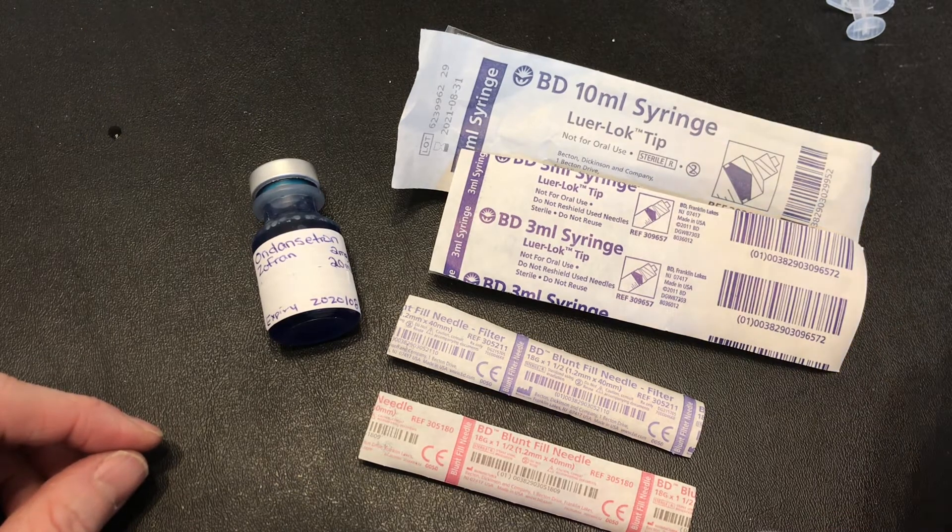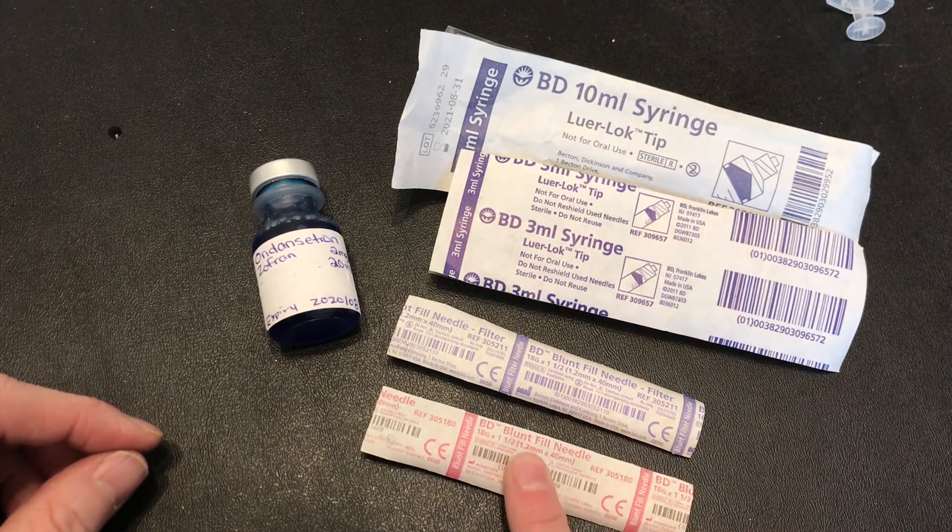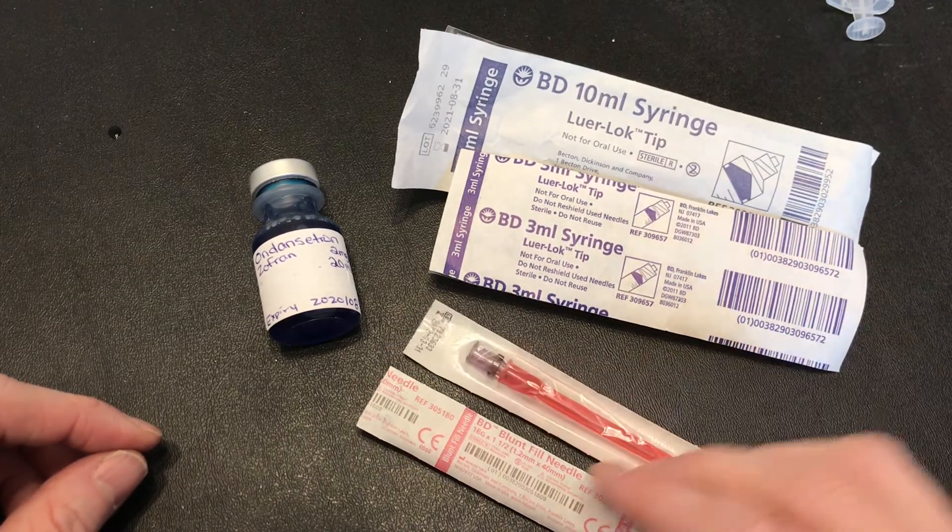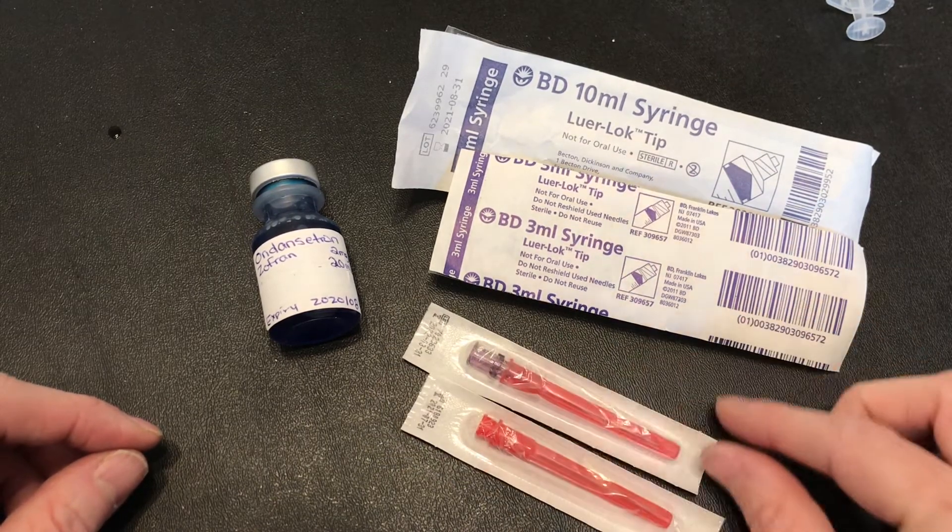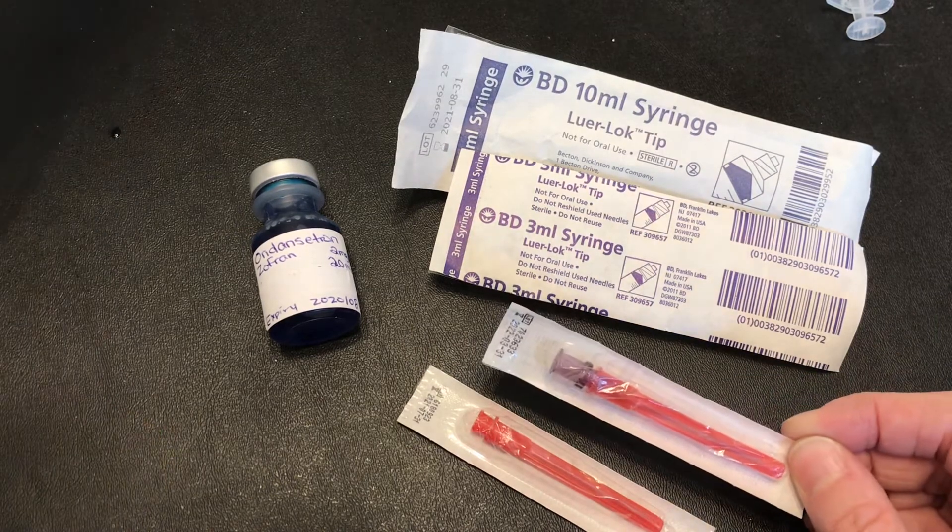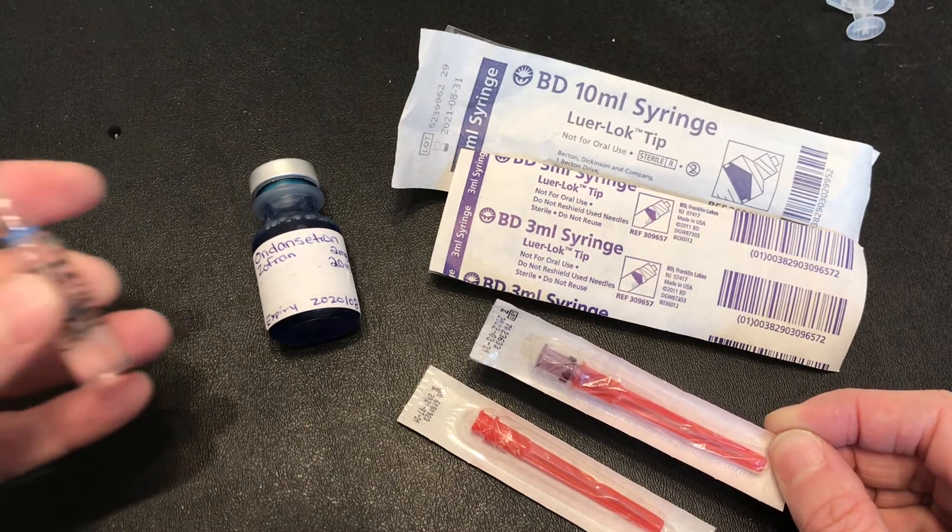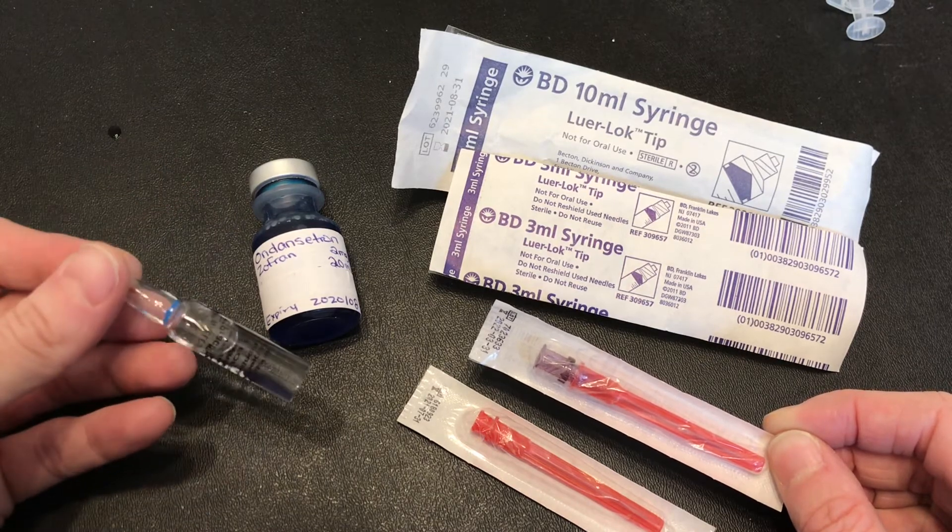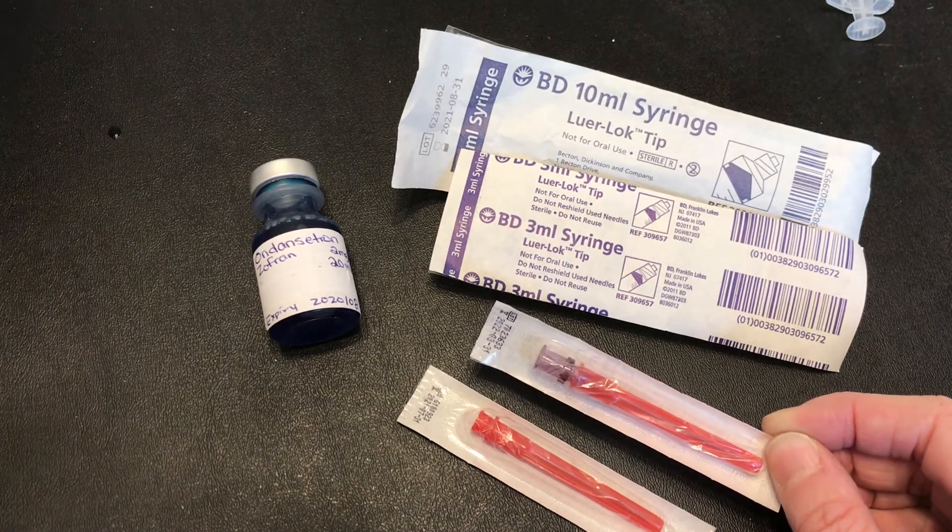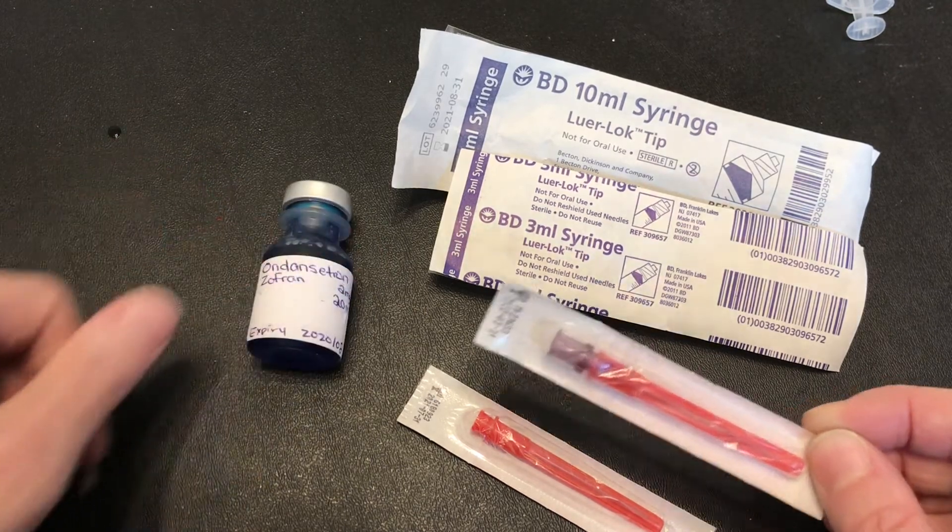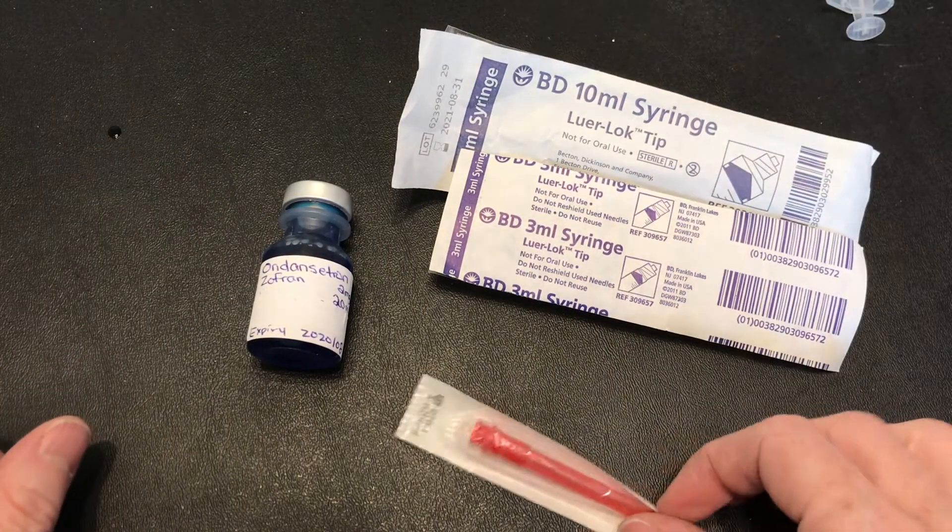Looking at the supplies I have here I see that I have both a blunt fill needle and a blunt fill needle with a filter. Now the filter is the one with the purple cap here, and why we use a filter is we don't want to get shards of glass into our patient's medication so we have to use the filter when we're working with ampoules. Now because I'm working with a vial it's got a rubber stopper, I don't need the filter, I'm just going to use the blunt end.